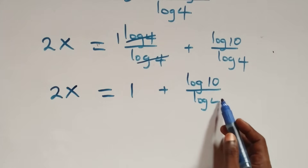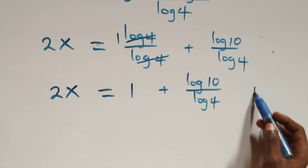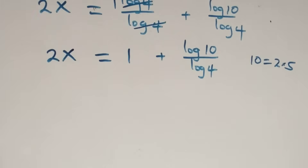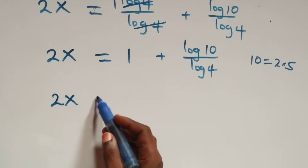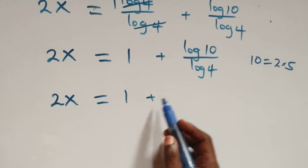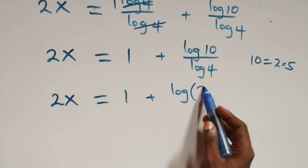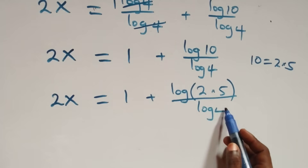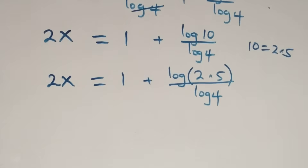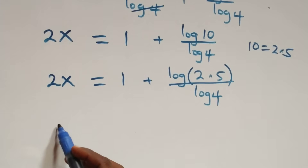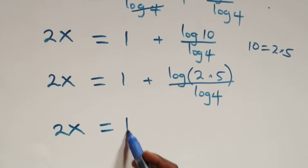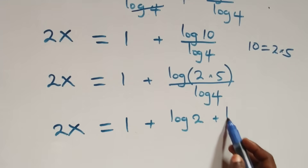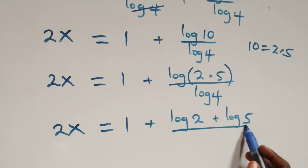Next step: ten can also be written as two times five. So what we have becomes two x equals to one plus log of two times five, over log four. This follows the log rule as well, giving two x equals to one plus log two plus log five, over log four.